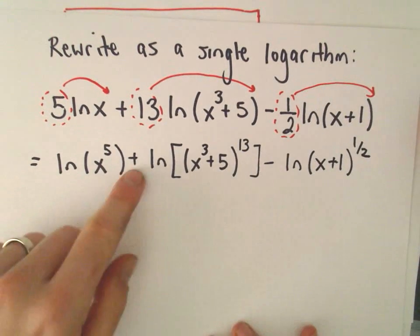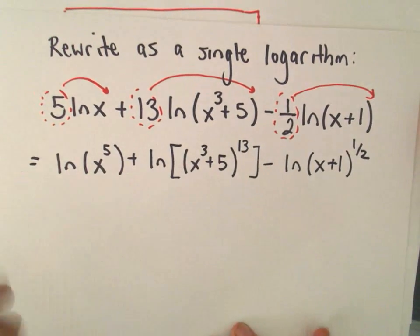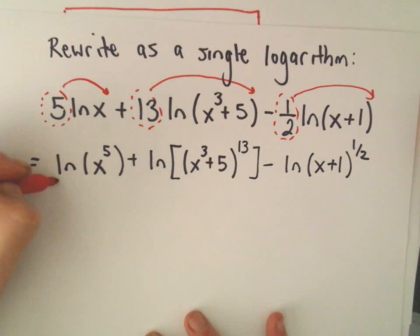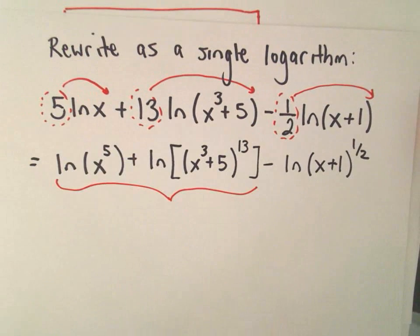And now, all the coefficients are gone. You've got positive 1's and negative 1's. That's what I want. Now I'm just going to start combining them two at a time as I move basically left to right.